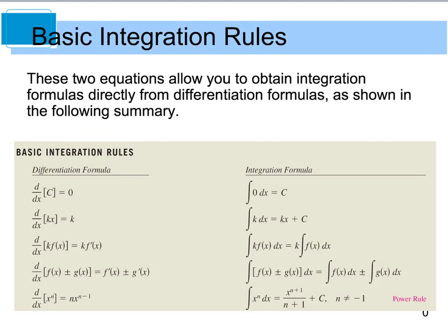Looking at the differentiation rules alongside the integration rules: the derivative of a constant is zero, so the integral of zero gives a constant. The derivative of kx is k, so the integral of k dx is kx + C. The derivative of k·f is k times the derivative; likewise the integral of k·f(x) is k times the integral of f(x). The derivative of a sum or difference gives the derivative of each part; undoing that, the integral of f ± g equals the integral of f ± the integral of g.